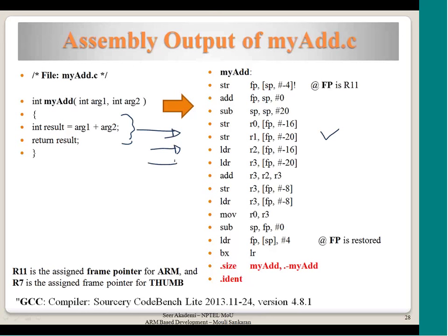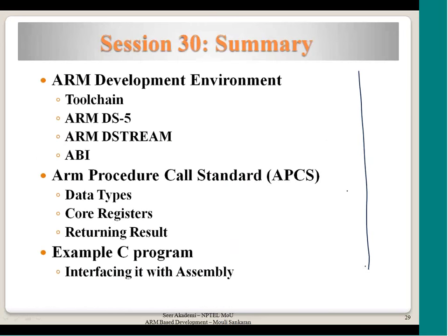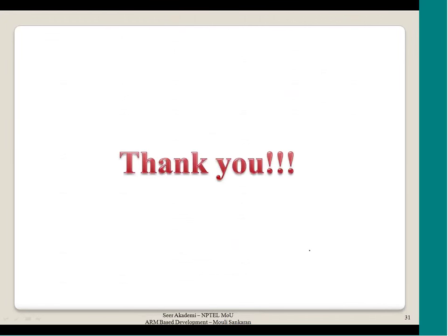If you understand what the compiler is doing in assembly, you will be able to debug problems in the system you have built. My intent was to explain how parameter passing happens and how the return value comes from the function. The exact implementation differs between compilers, but all stick to the AAPCS convention — parameters in r0-r3, return in r0 and r1. With this we come to the end of this session. In the next session I will cover the linker and conclude the discussion on tools. Thank you very much, have a nice day.